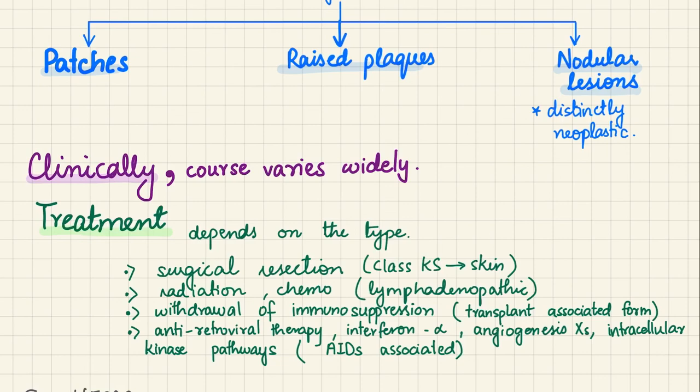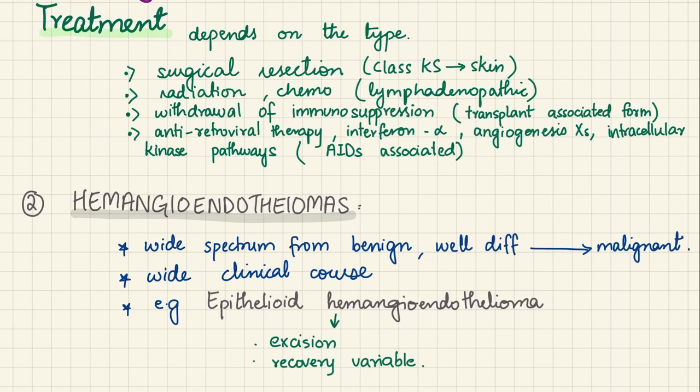Treatment of Kaposi's sarcoma depends on type: for skin-predominant disease, surgical resection or cryotherapy; for lymphadenopathic involvement, radiation and chemotherapy; for transplant-associated disease, withdrawal of immunosuppression; and for AIDS-associated disease, antiretroviral therapy and other AIDS-related drugs.